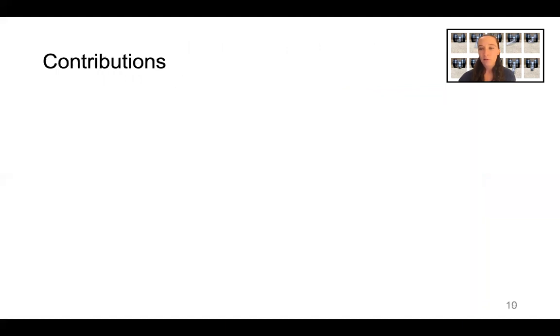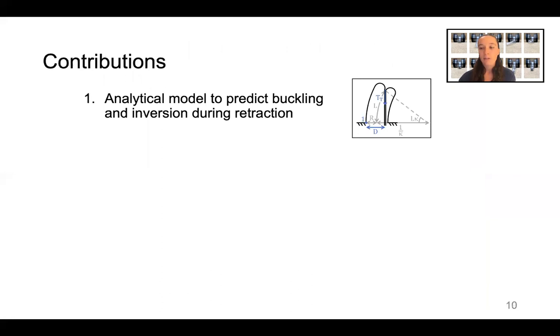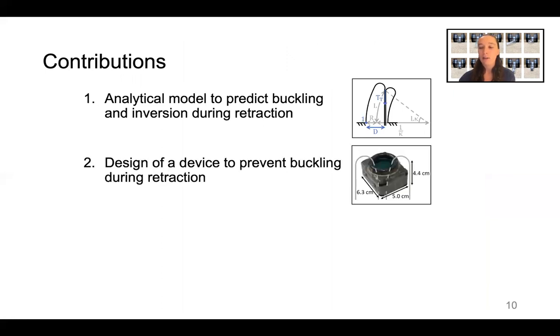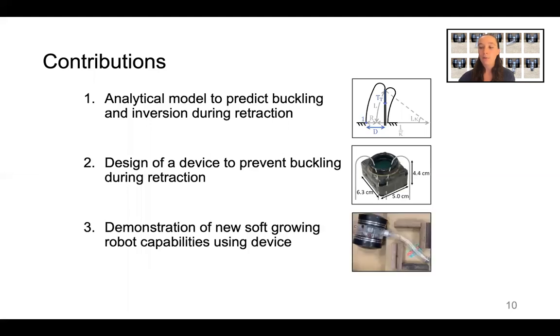The contributions of this work are, first, we developed and validated an analytical model to predict when buckling and inversion will occur during retraction. Second, we designed a device to prevent buckling during retraction. And third, we demonstrated several new soft-growing robot capabilities that our retraction device enables.